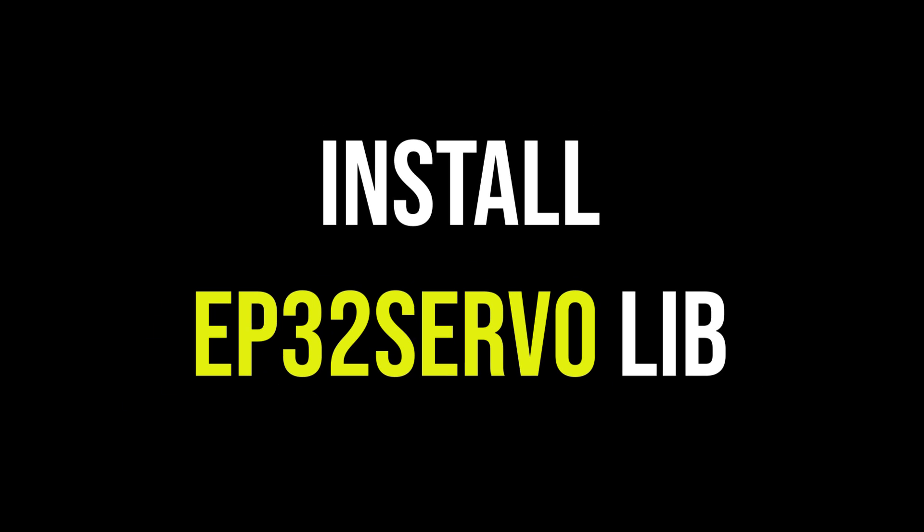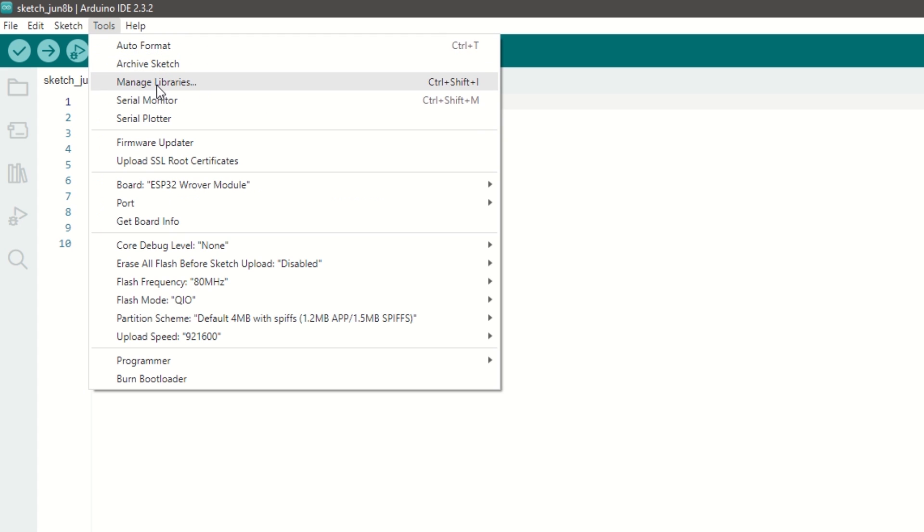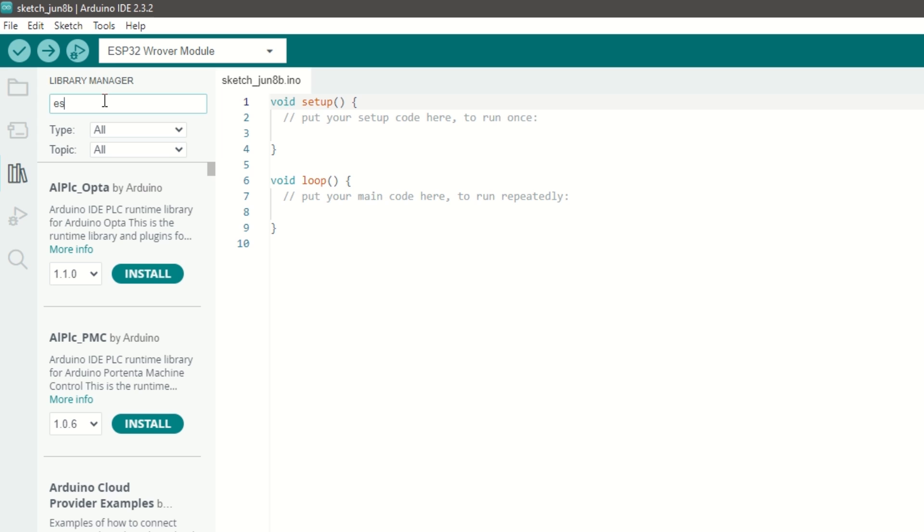Let's take a look at Receiver code now. First we need to install ESP32 servo library for servo motor control. Go to tools and then manage library. Search for ESP32 servo and install it.